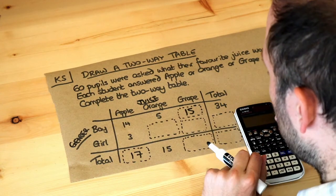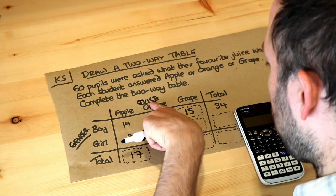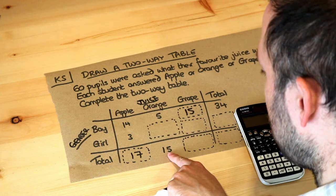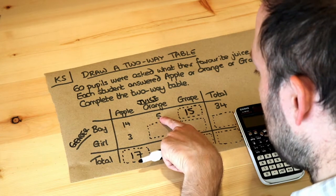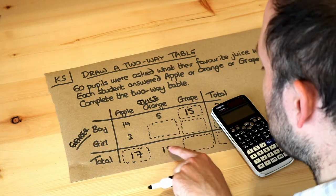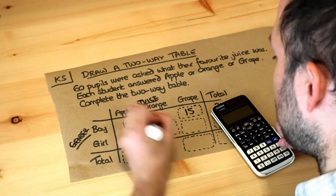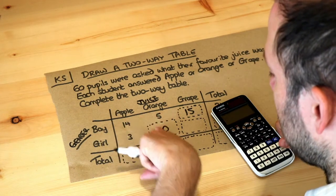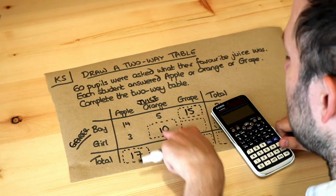As we add more numbers we can work out more and more. Looking at the orange row, there were 15 people in total who liked orange. We know 5 of those were boys, so the rest would be girls. We do 15 minus 5, which gives 10. And indeed 15 equals 5 plus 10 — that is the total of this column.